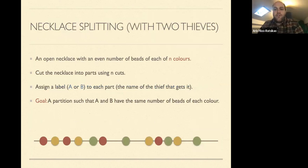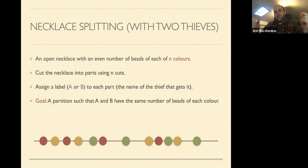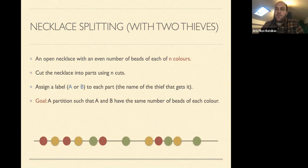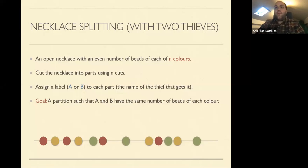Let me start with the definition of the necklace splitting problem. For most of this presentation, when I refer to the necklace splitting problem, I will be referring to the version with two thieves. In this version, we have an open necklace — you can think of it as a string — and on this necklace we have beads of n different colors, with an even number of beads from each color. The objective is to cut the necklace using n cuts, then assign a label to each piece, either A or B, representing the two thieves.